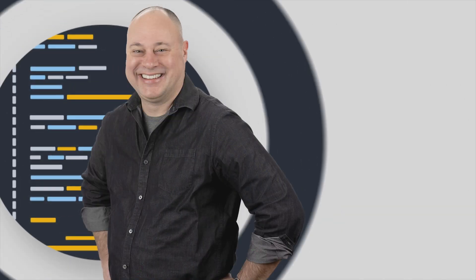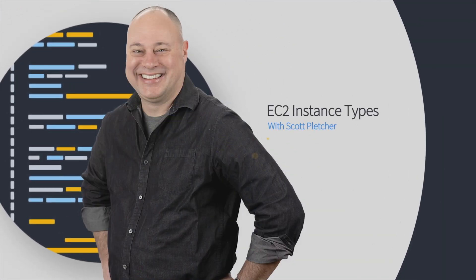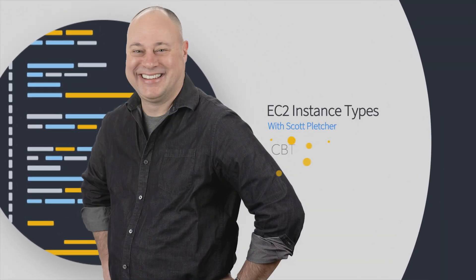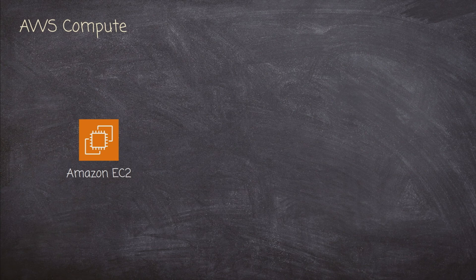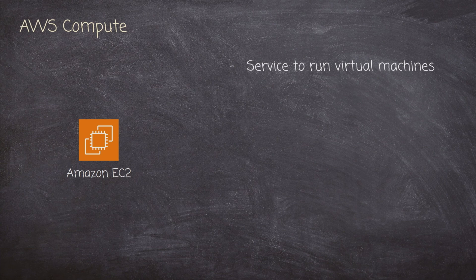Are you ready for our journey down the EC2 rabbit hole? Let's get started. Amazon EC2 was created back in 2006, and it was one of the foundational services that AWS released as part of introducing the platform. In essence, it's just a service to run virtual machines.